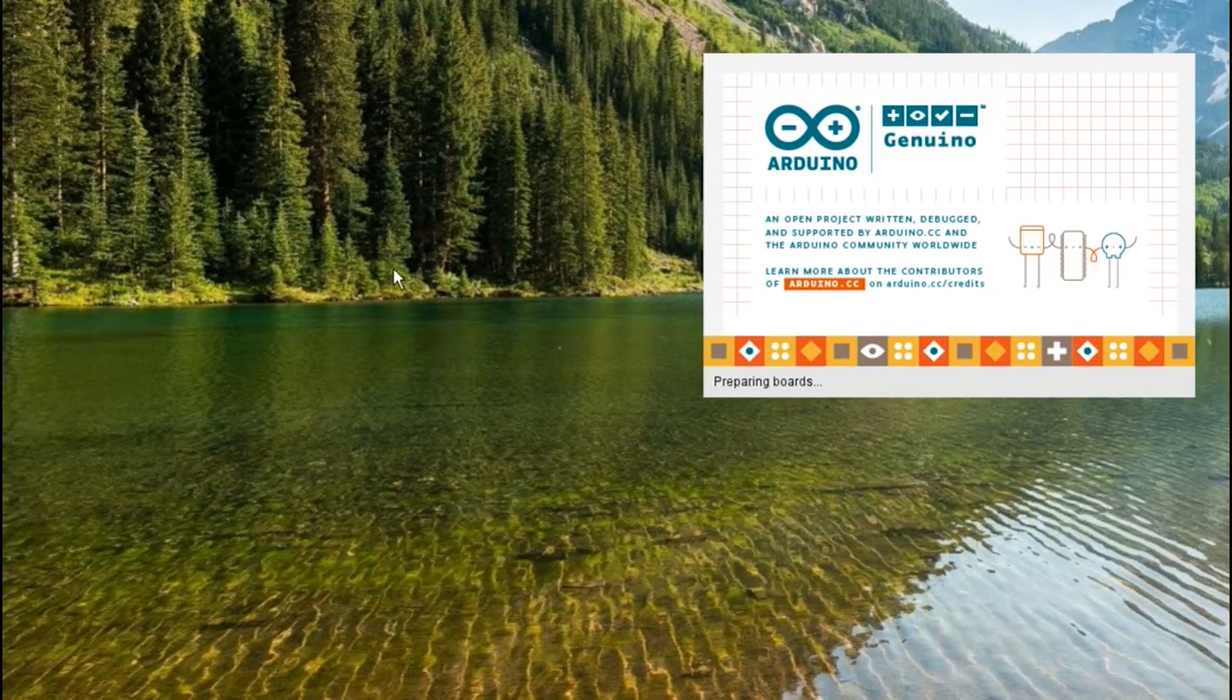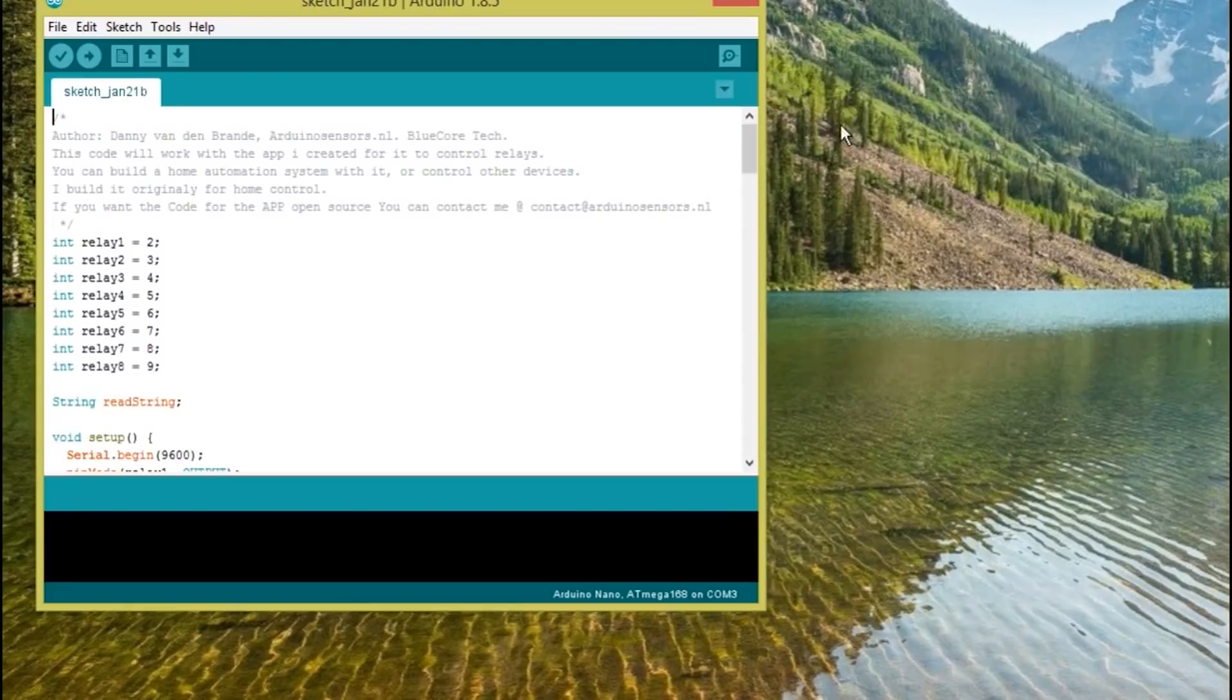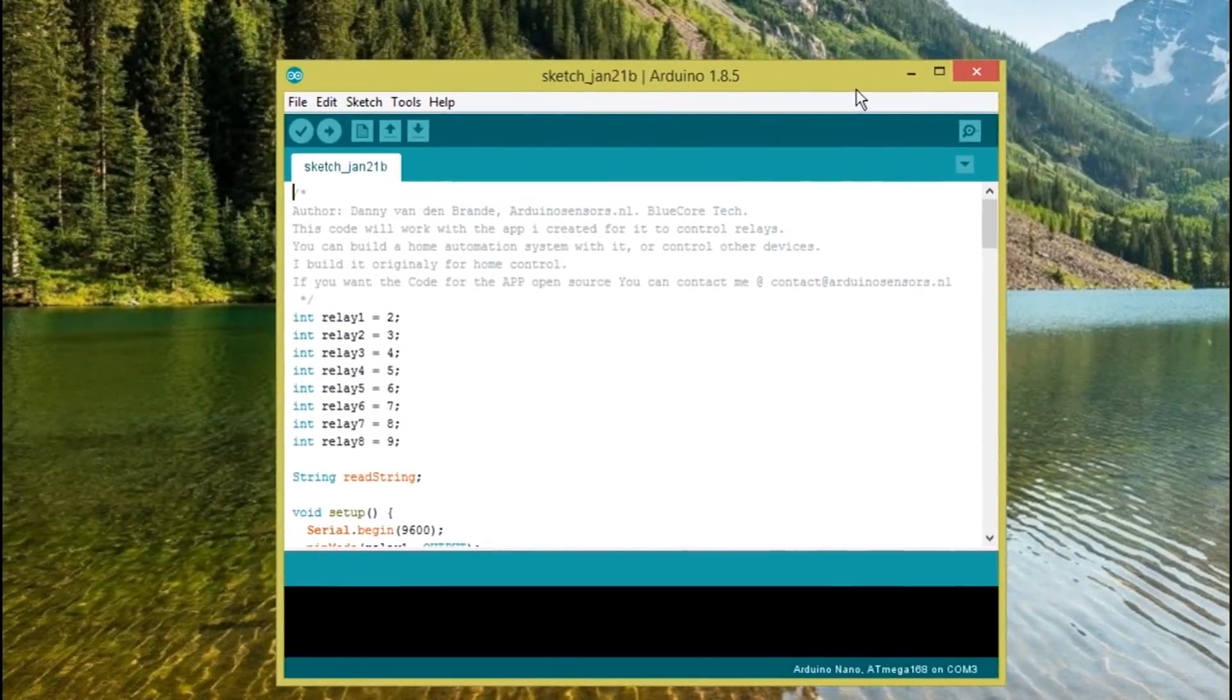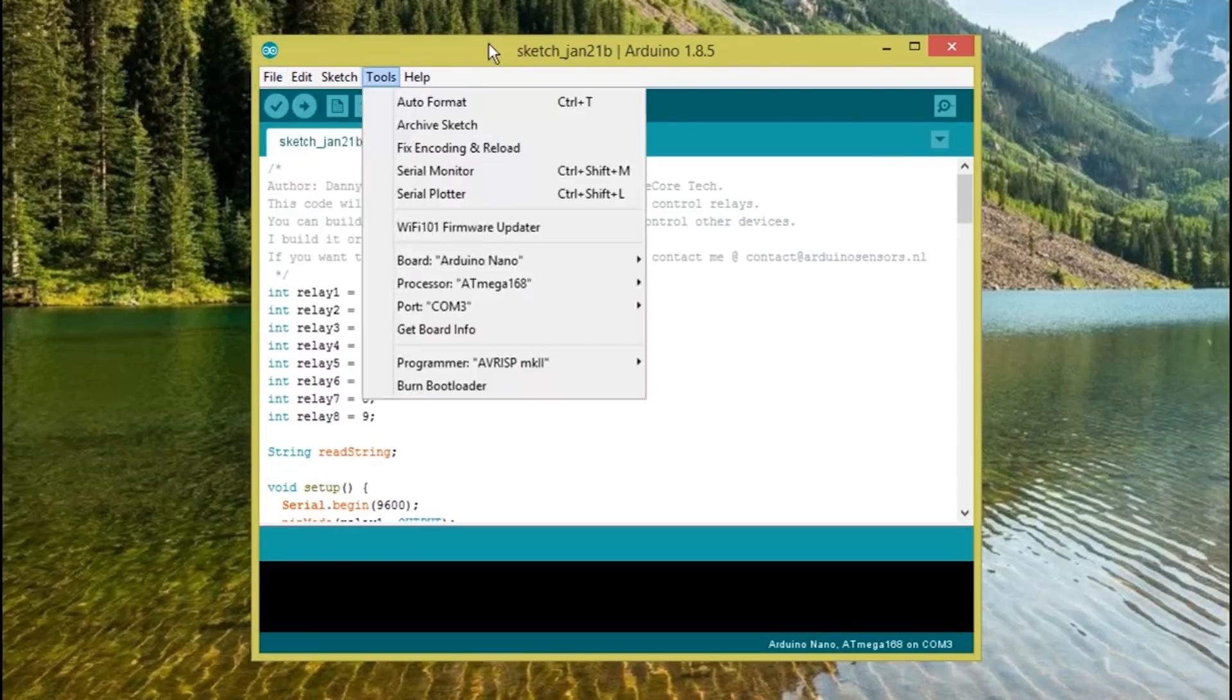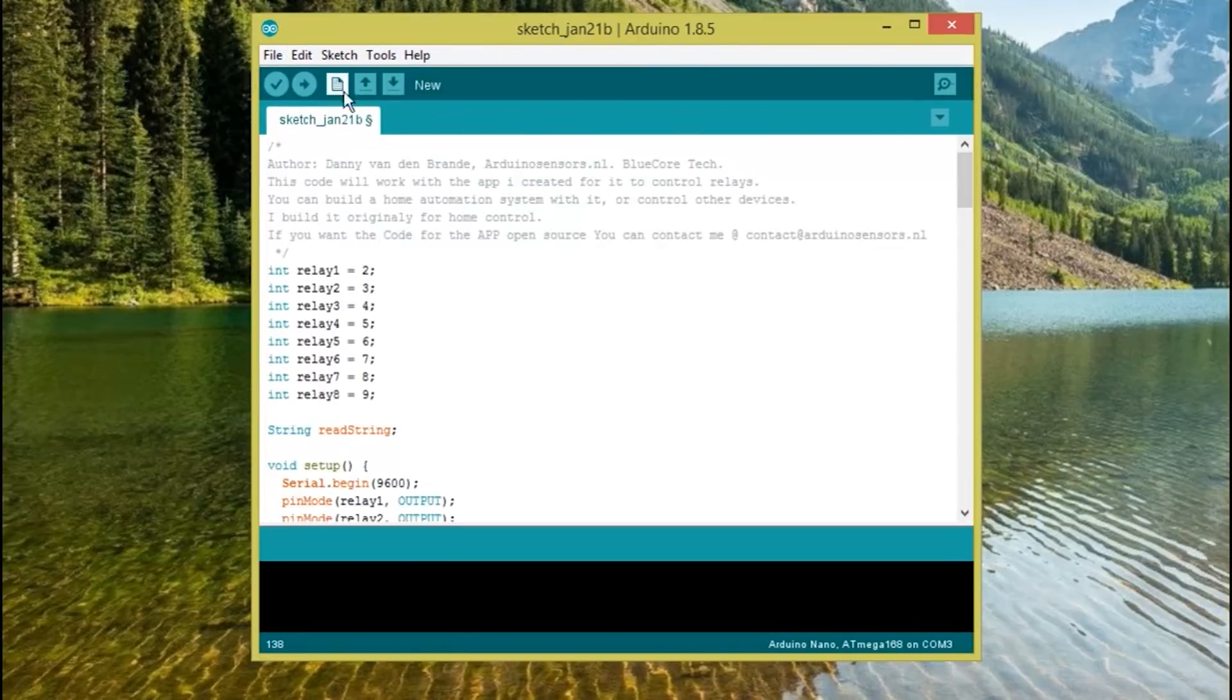First, we're going to program the Arduino, and it's super easy. Download the sketch code from the link below, open the code with the Arduino program, select your Arduino board, select your COM port, and click upload. A couple of seconds are needed to finish the task.